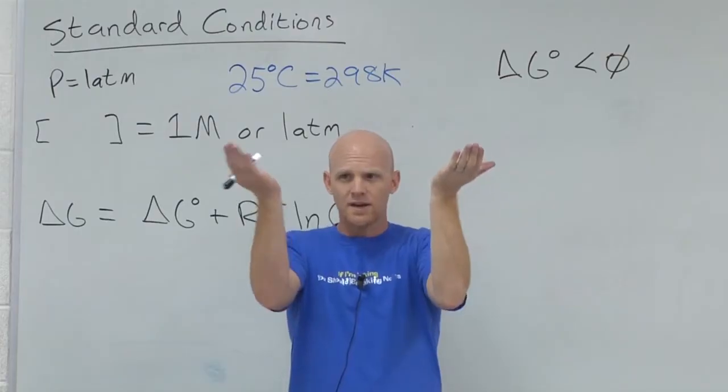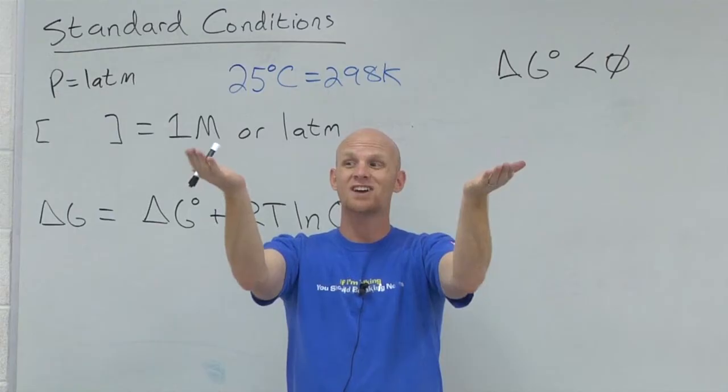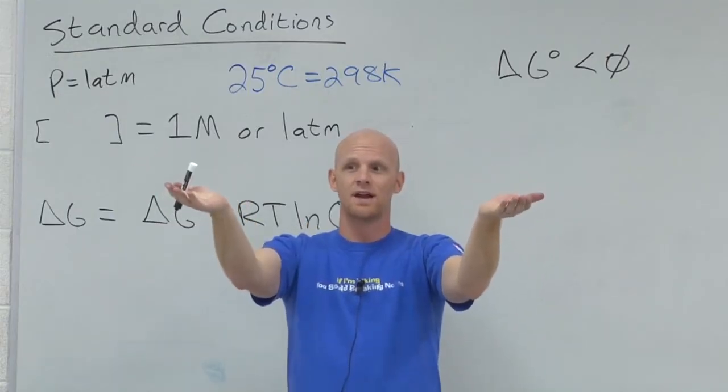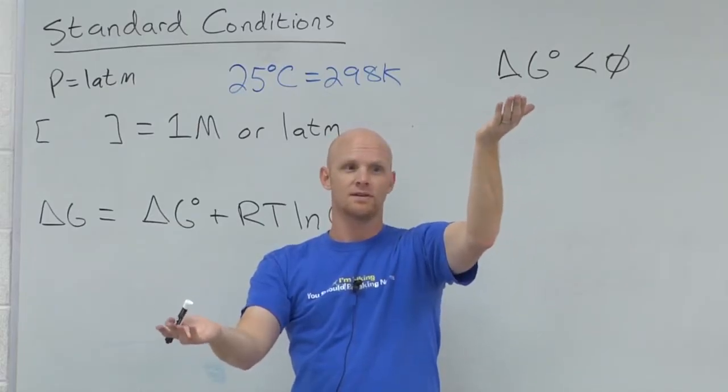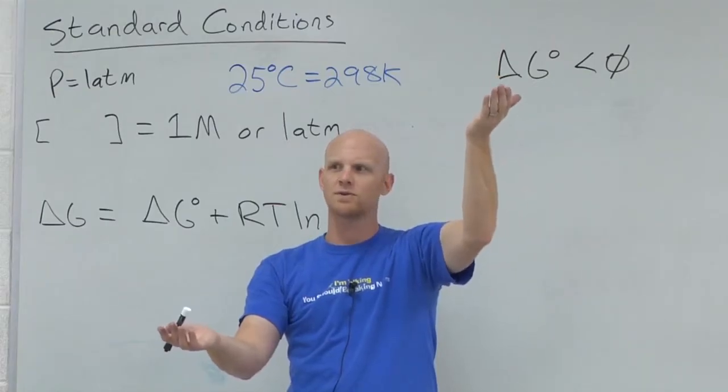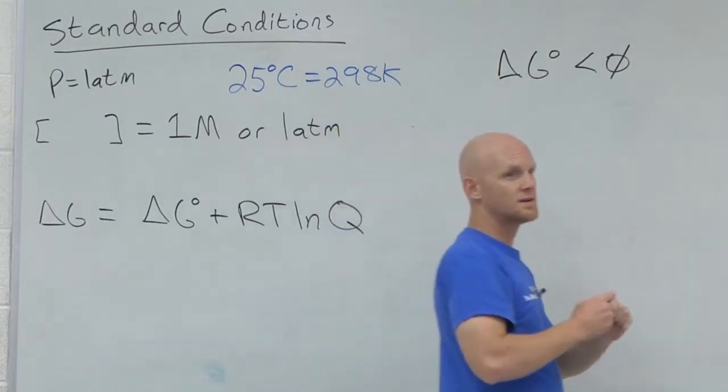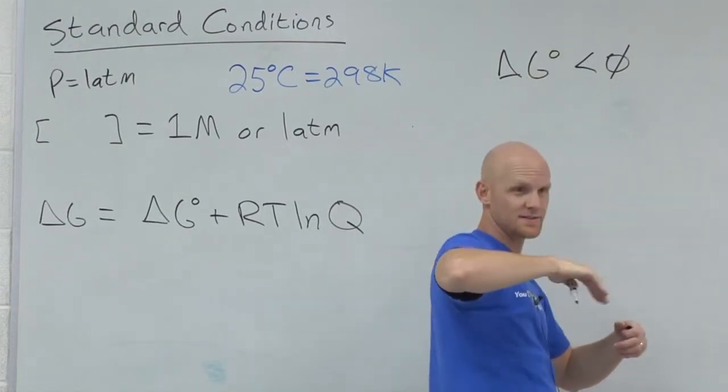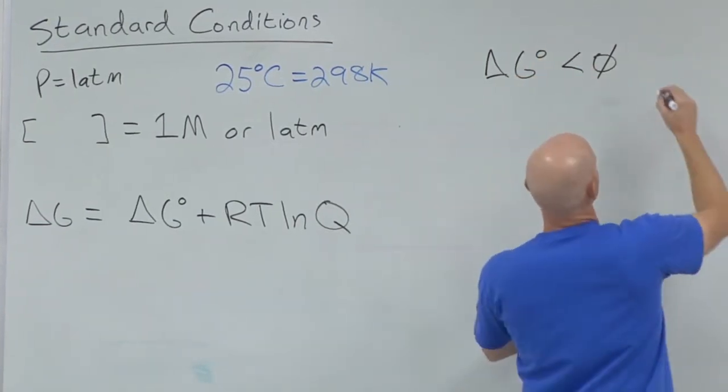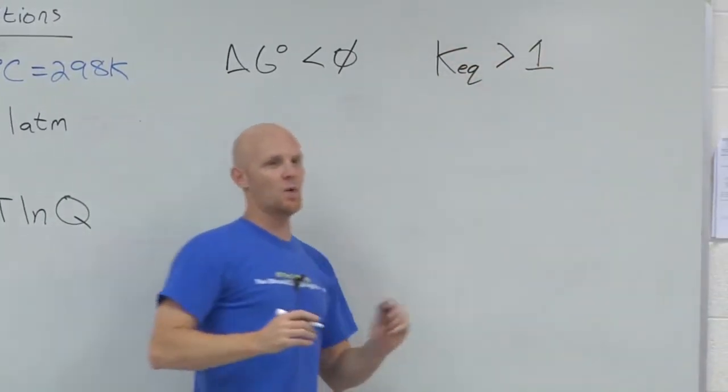So if I start out with equal amounts of reactants and products at standard conditions, and the reaction is spontaneous as it's written left to right, then I'm going to end up with more what by the time I reach equilibrium? More products under those conditions. And if once I reach equilibrium, I have more products, then what should I expect for the value of the equilibrium constant? Don't say zero. Because products over reactants, and you've got more products than reactants. More numerator than denominator. Greater than one, not zero.